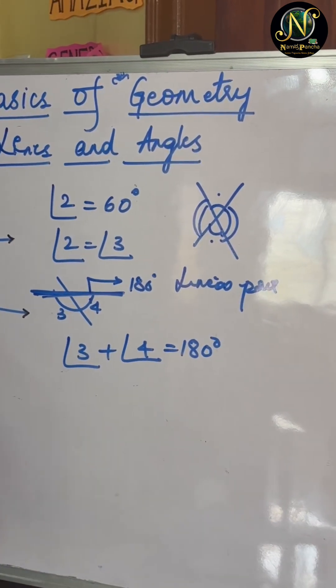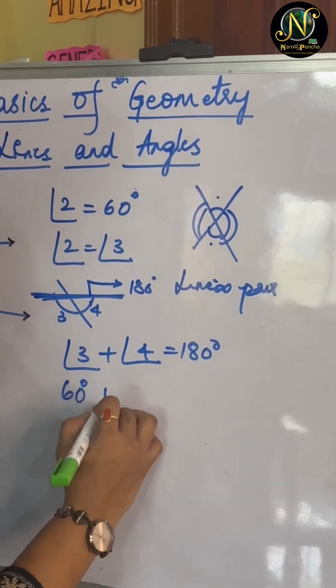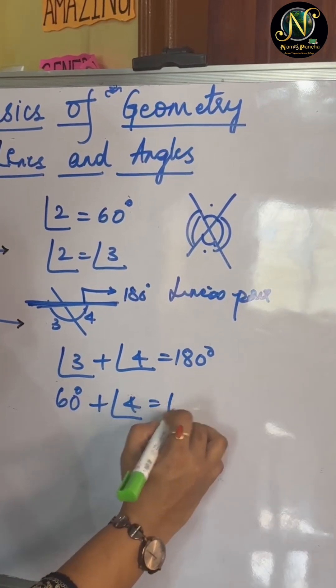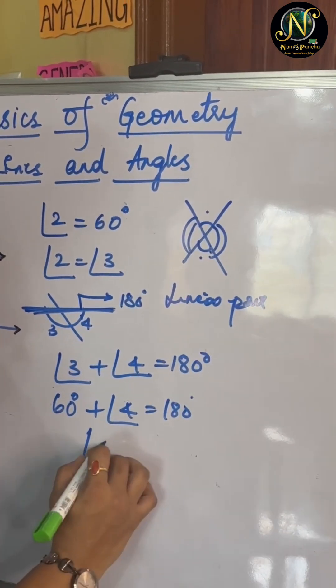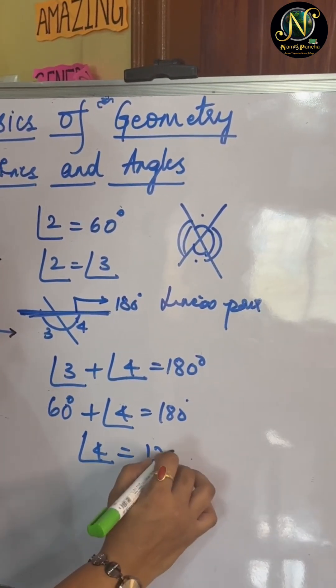We already know angle 3 is 60 degrees. So 60 degrees plus angle 4 is equal to 180. So angle 4 is equal to 120.